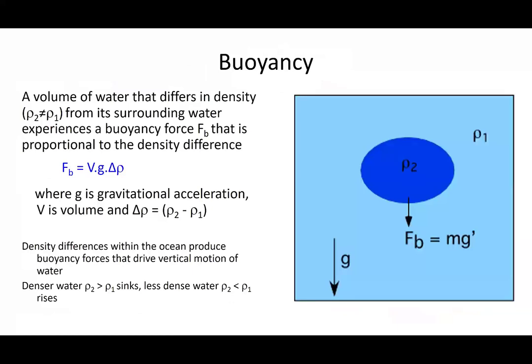Let's think now about buoyancy. A volume of water that differs in its density from its surrounding water will experience a buoyancy force proportional to the density difference between that volume of water and the surrounding water. That force is proportional to the volume times the density difference multiplied by the gravitational acceleration constant — force equals mass times acceleration, Fb equals mass times gravitational acceleration. As a result of this buoyancy force due to density differences, denser water sinks and less dense water rises through the ocean.